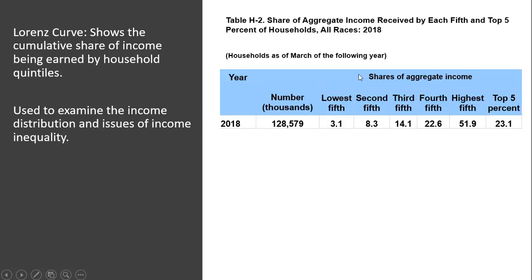Here's data for the United States 2018. We have the share of aggregate income received by each fifth or quintile of the households. The number of households here in thousands is roughly 129 million.